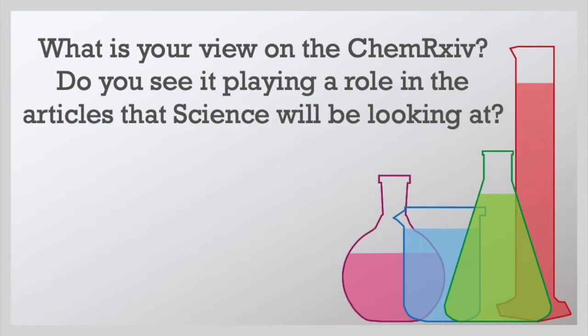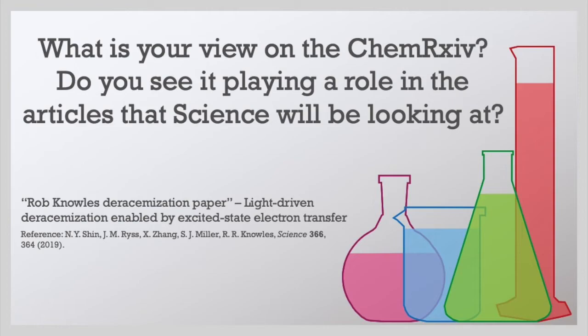So we've got about 10 minutes left and there's definitely something that Grace, Matt, and I really wanted to touch on - that is the ChemRxiv and archive journals in general. We know that these archives have been around for physics and biology for a while, but only in the past couple years has ChemRxiv been built up. Only really this year we've seen Nature and Science start publishing journals that have been on ChemRxiv. The one we've discussed recently is Rob Knowles' deracemization paper. Marshall going to listen to this?